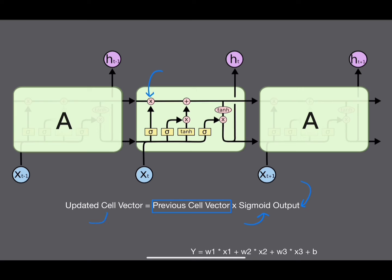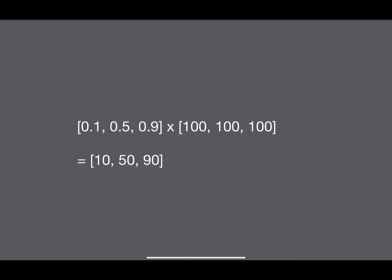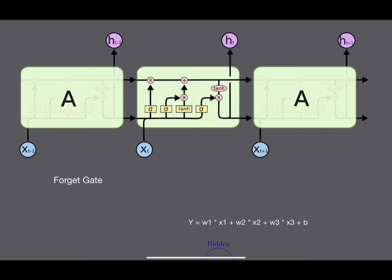The vector outputted from this gate factors in the current word and whatever vector came from the previous time step. We use that to update the cell state via element-wise multiplication of the previous cell state vector and the sigmoid output. Since entries are between zero and one, this is equivalent to taking a fraction of each entry in the previous cell state — preserving some fraction of that information.